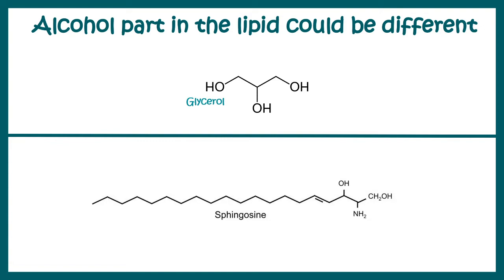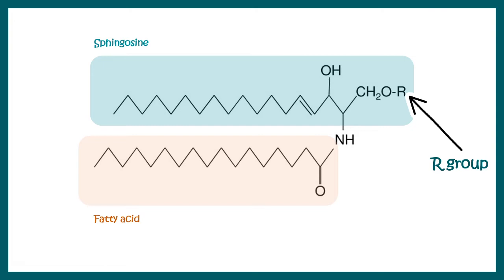If we talk about the basic framework of a sphingolipid, this is how it looks. It would have three components: one is sphingosine, the alcohol part; one is fatty acid, the acid part — those are the two components — and the third component is the R group, which the arrow is pointing towards.